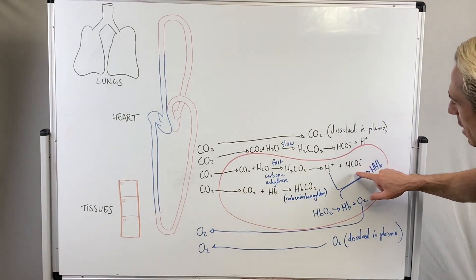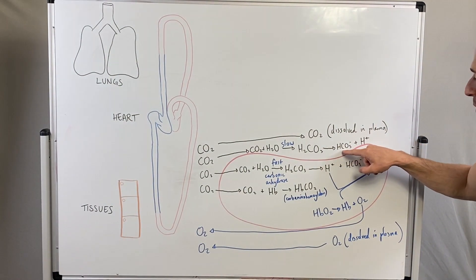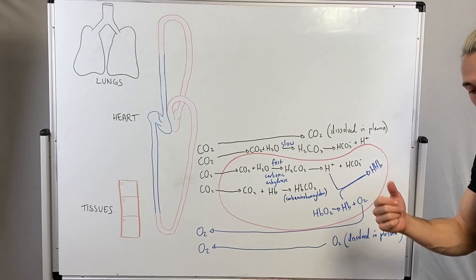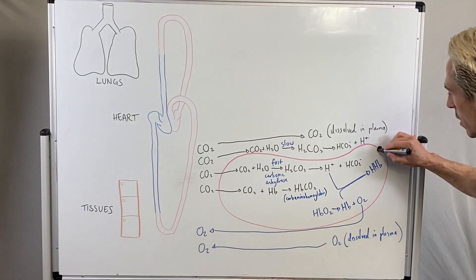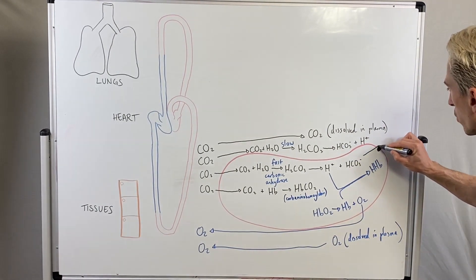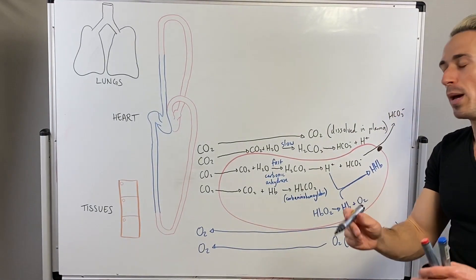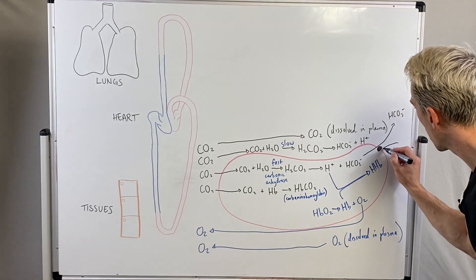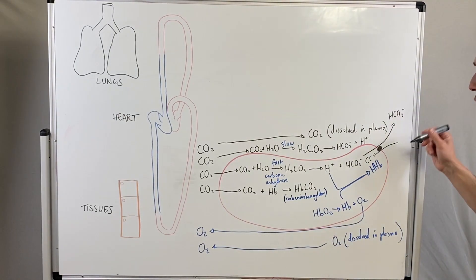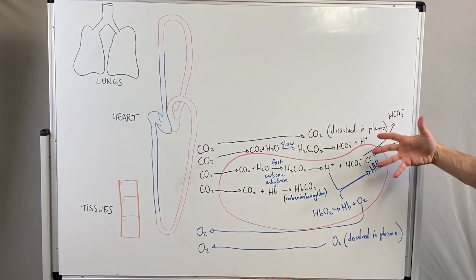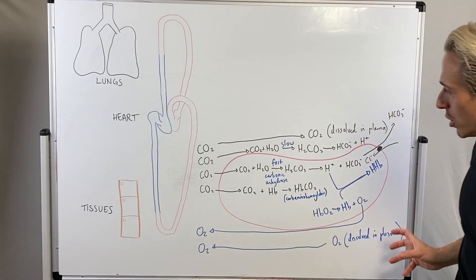Another important point: the bicarbonate isn't just floating in the red blood cell — it needs to get out. The bicarbonate that formed inside the cell needs to come across a transport channel in the red blood cell membrane and be transported out into the plasma, where it is exchanged with chloride. Chloride shifts into the cell — this is called the chloride shift. This is how carbon dioxide moves from the tissues into the red blood cell or plasma for transport, while oxygen goes in the opposite direction.